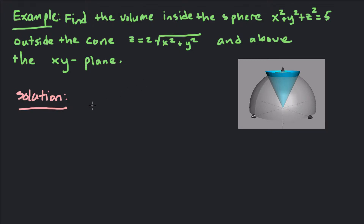Hey guys, what's up? Today we've got a triple integral. We're going to find the volume inside of a sphere of radius square root 5, outside a cone z equals 2 times the square root of x squared plus y squared, and above the xy plane.